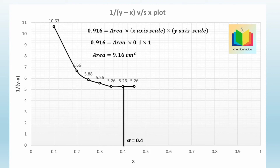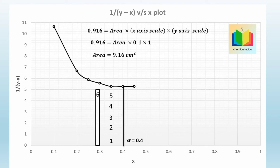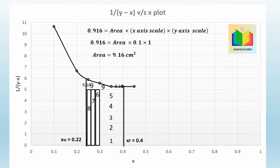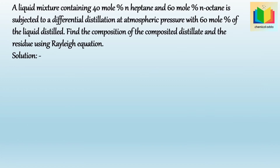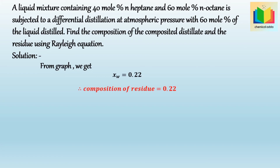We now need to fit the 9.16 cm² area under the curve starting from X = 0.4. Since one block on the graph paper is 1 cm², we count 9.16 boxes. In this way, from the graph we obtain X_W = 0.22, which is the residue composition.